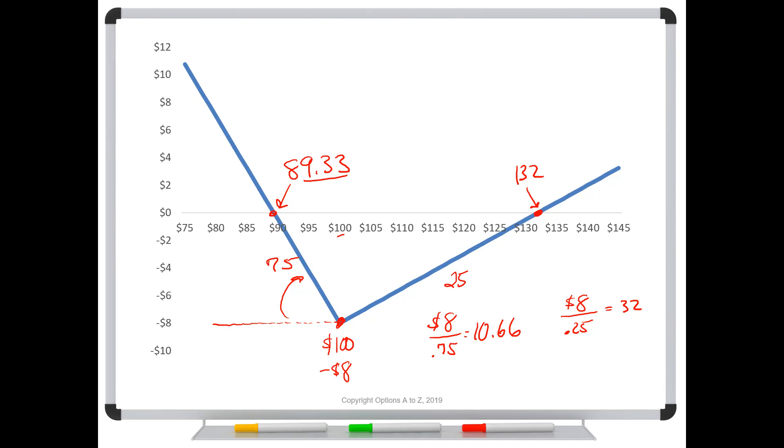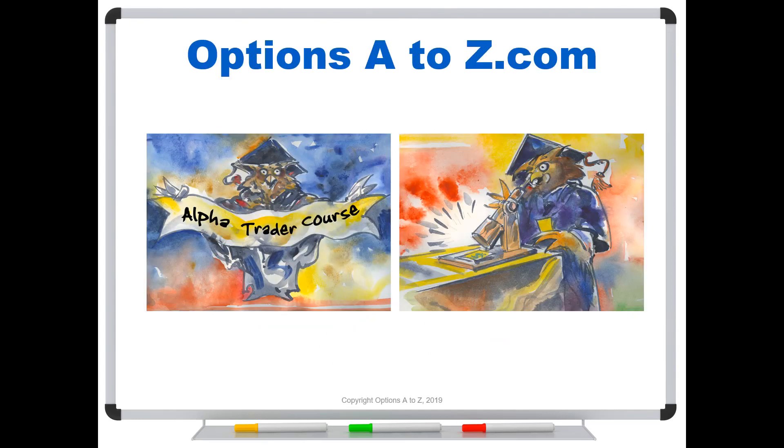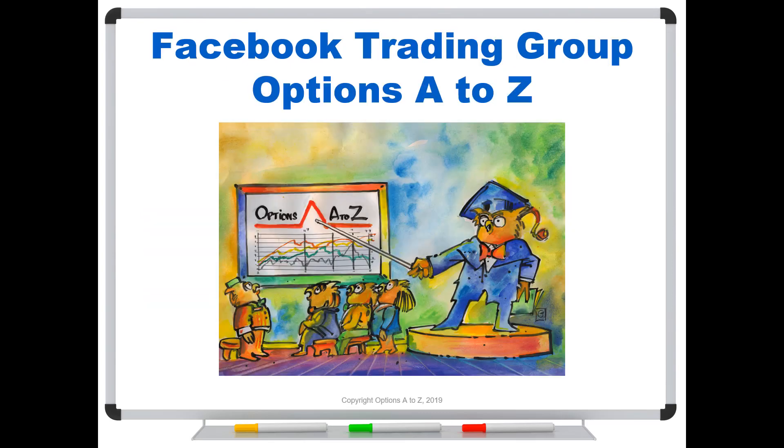So I hope this helps you to understand why there can certainly be cases where you might be looking at a strategy and you think you should be able to figure out what the break evens are, but your broker's platform is showing something quite different. And in those cases, it's most likely because you have a ratioed strategy. So just kind of keep those points in mind and it will remove some of the mysteries. For those who'd like to learn more about the art and science of options trading, please check out the Alpha Trader course and strategy lab at optionsAtoZ.com. Also, please join us on the Facebook trading group, Options A to Z, and you can find a link in the description below. Thank you.